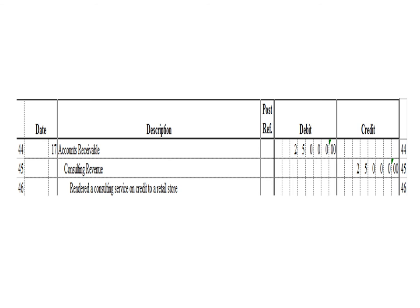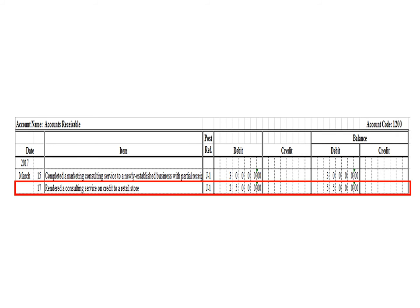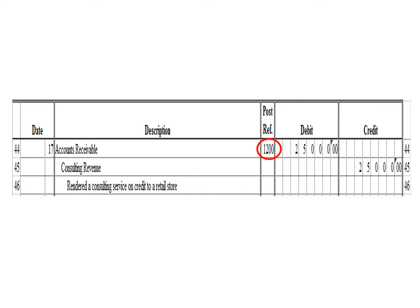Next transaction: a debit to accounts receivable 25,000 pesos and a credit to consulting revenue 25,000 pesos. To post the debit entry in the accounts receivable ledger, we write date 17, description: rendered a consulting service on credit to a retail store, posting reference J1. Under the debit column, write 25,000 pesos. The balance is 55,000 pesos — previous debit balance 30,000 plus 25,000 debit. As of March 17, the accounts receivable ledger balance is 55,000 pesos debit. After posting, write posting reference 1200.